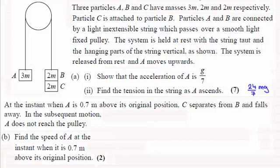OK, welcome back then if you had a go. So we know that after 0.7 metres as A ascends, particle C comes away from B. So I just want to mark that on here, let's say this is the distance 0.7 metres.